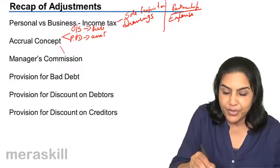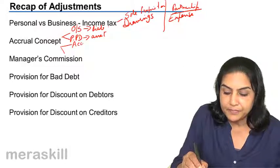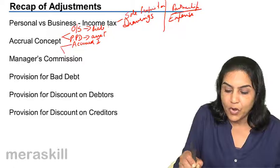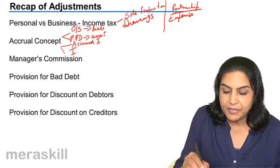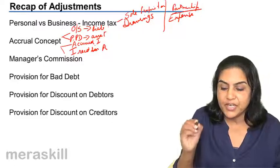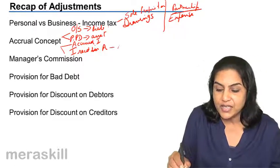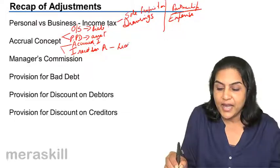Similarly, with respect to income, we might have accrued income or we might have income received in advance. What is income received in advance? This is a liability. Why is it a liability?